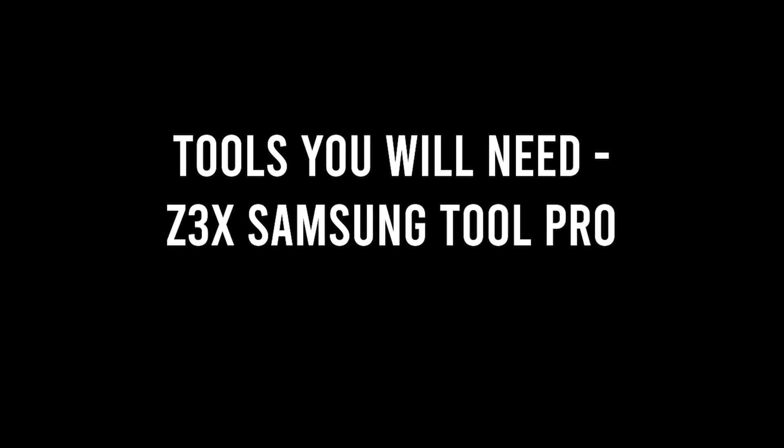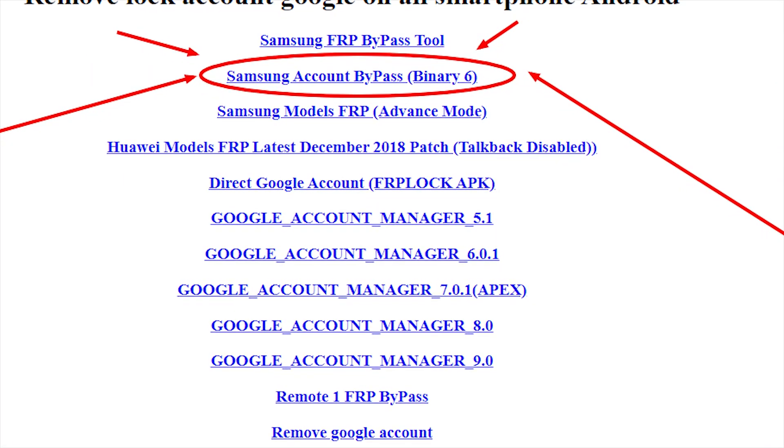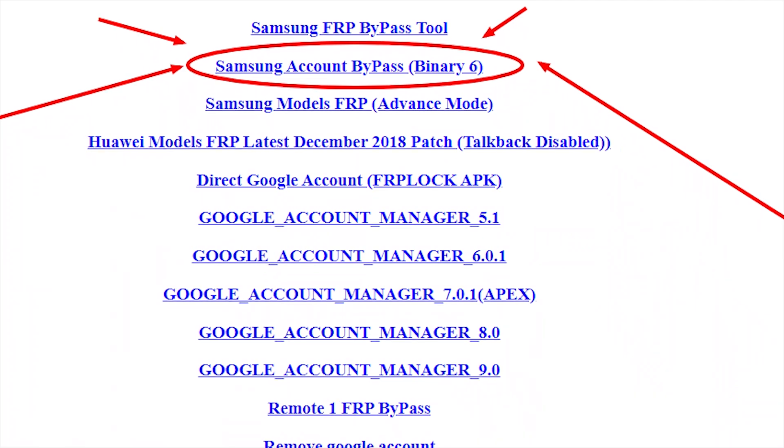Any version will do but it has to be after version 25. You need to flash this phone with a combination file. To get the combination file, go to frpbypass.co.uk and download Samsung account bypass binary 6. When you click on it you will download the zip file, which contains the combination file binary 6 and the full ROM flash file binary 6.